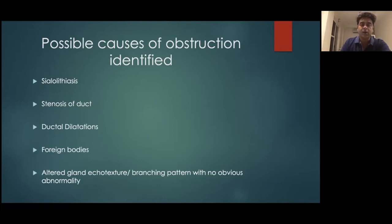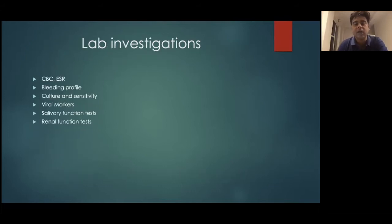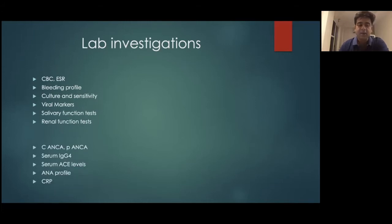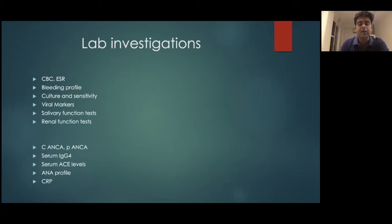For stenosis — if we find stenosis on radiology — we go back to our lab investigations and advise extra tests: C-ANCA, P-ANCA, IgG4, ACE levels, ANA profile, and CRP. These are to basically rule out systemic disorders, specifically Sjogren's syndrome, sarcoidosis, granulomatous diseases, and specifically IgG4-related disease, which has been known to cause a lot of parotiditis.